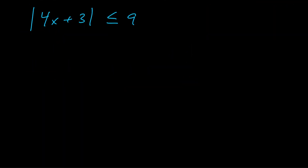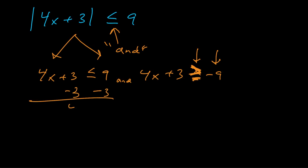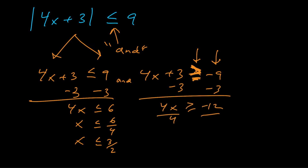For the second original problem, notice it's less than or equal to — so we're thinking 'and', or intersection. Algebraically, we separate it into two inequalities: 4x plus 3 is less than or equal to 9, and 4x plus 3 is greater than or equal to negative 9 — flip the inequality sign and change 9 to negative 9. Solving each: subtract 3, divide by 4, reducing the fraction to three-halves for the first, and doing the same for the second.